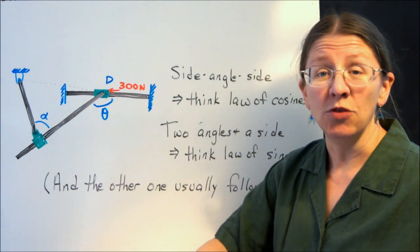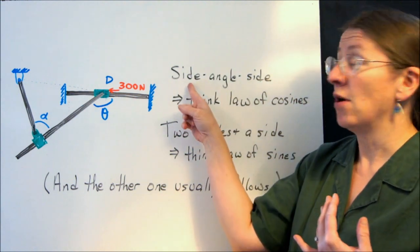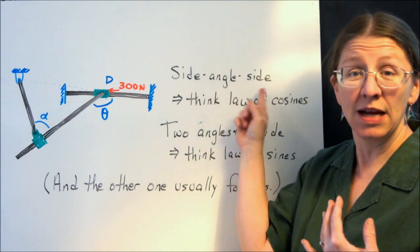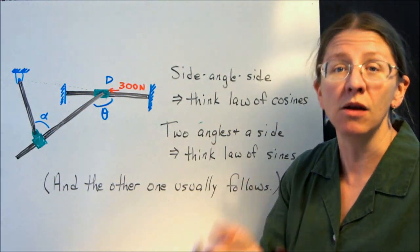So what are the triggers that make you remember that you have to use the Law of Sines and Cosines? The first one is anytime you have a side and then the two sides and the angle in between them, that needs to be your immediate, oh yeah, I know what to do with that. That's the Law of Cosines.